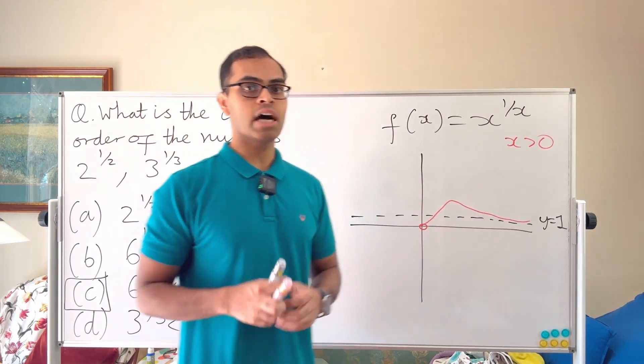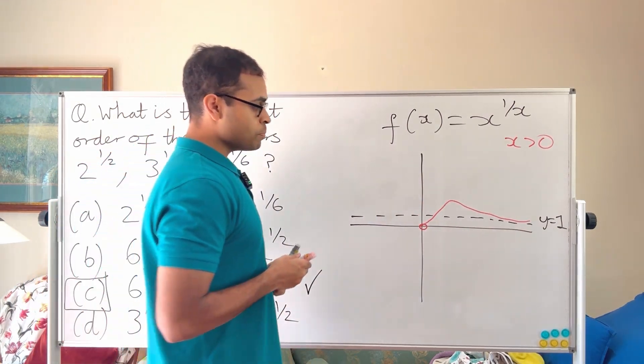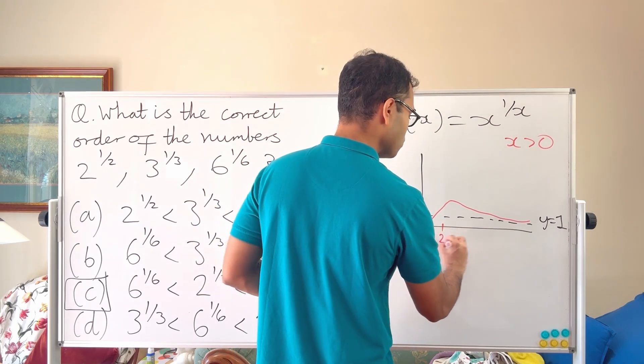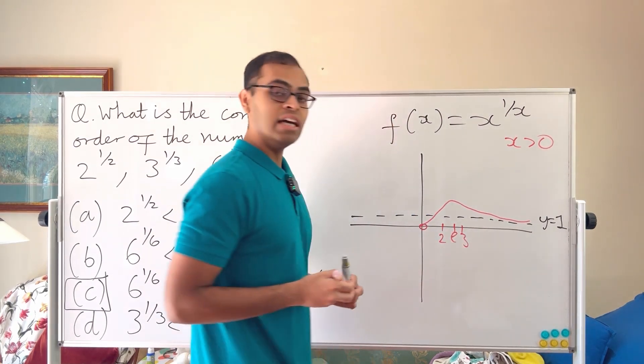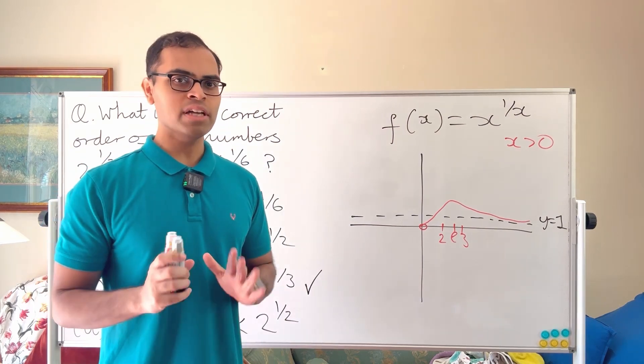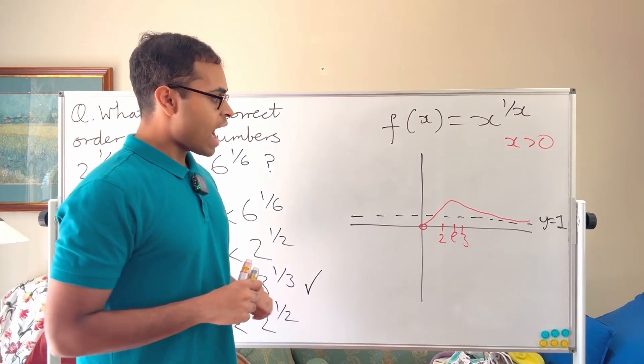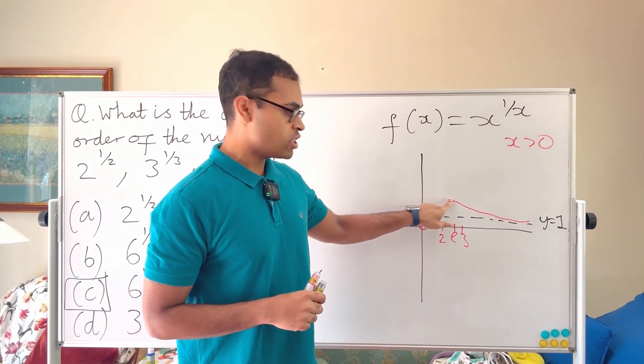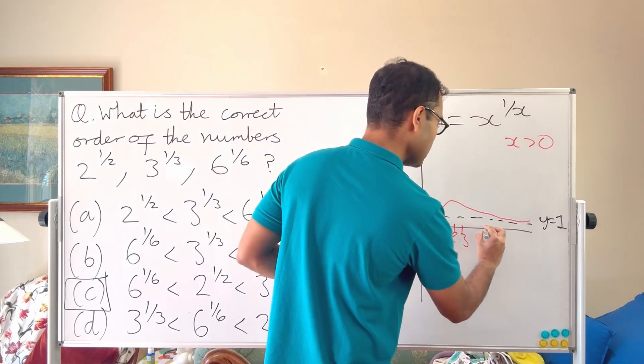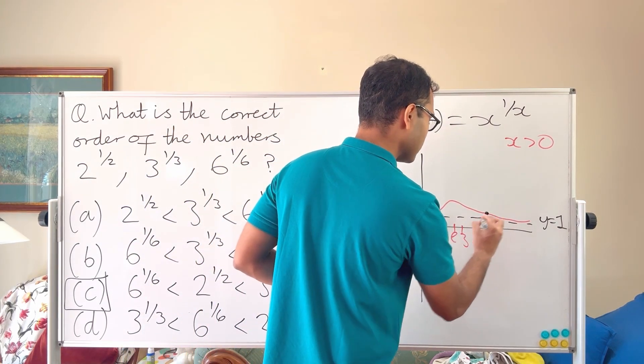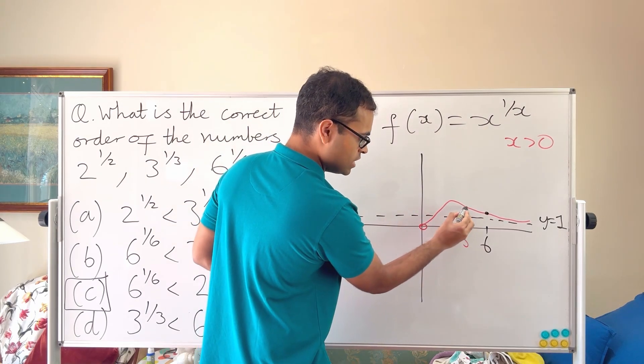But the peak happens somewhere between two and three, and it happens at this number which is called e - it's a very special number, it's 2.7 something something something, and that's where the max of the function appears. And then it goes down, and that's what happens with six - when you get to six it's already gone pretty far down.